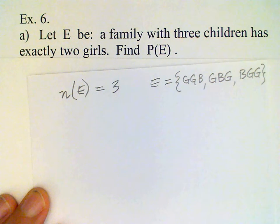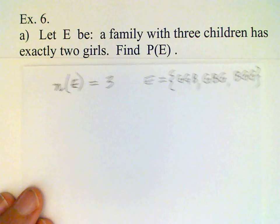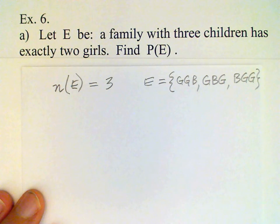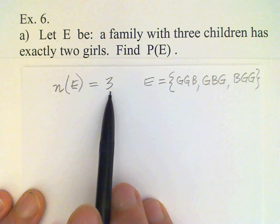In other words, the boy could be the youngest, the middle child, or the oldest. So there's three different possibilities in this event, three different outcomes. And so that's where we get this number here. There's three outcomes in the event.